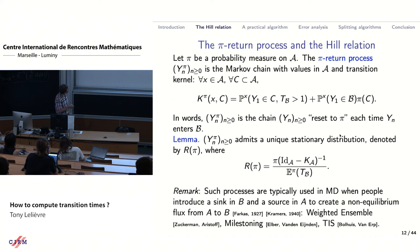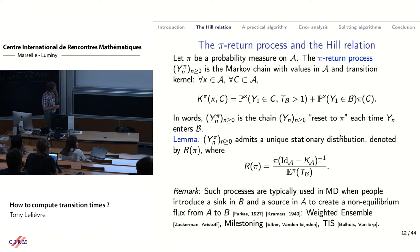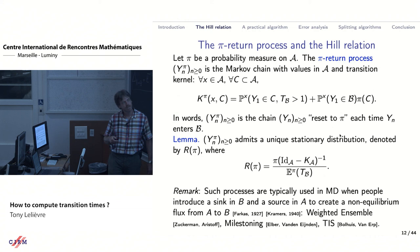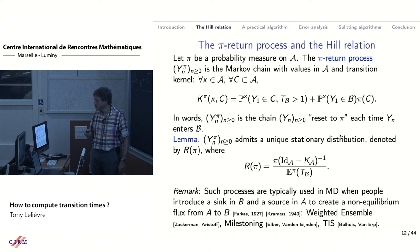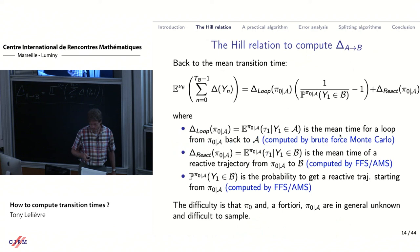At this point, pi could be whatever probability measure on A. In particular, there will be good pi's and bad ones in terms of estimator variance. For any pi, this process lives in A; each time it goes into B it is re-injected according to pi. You have this nice Hill relation, which says that the expectation of pi of this long, large sum is just a ratio: in the numerator the average of f with respect to the equilibrium probability, and in the denominator a small probability.